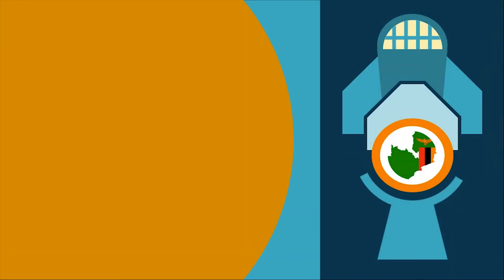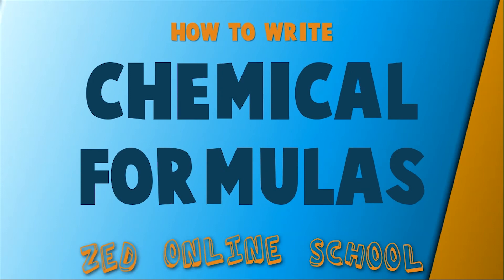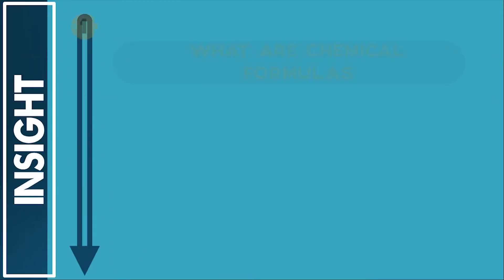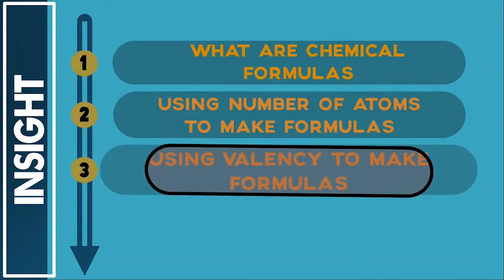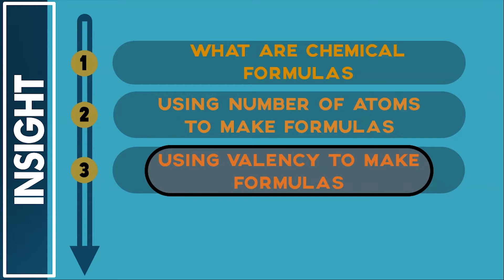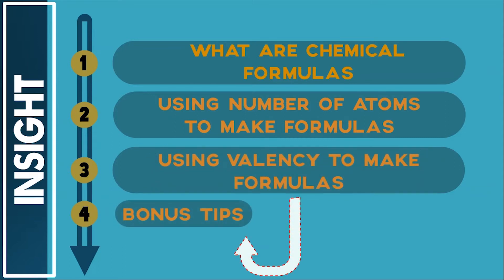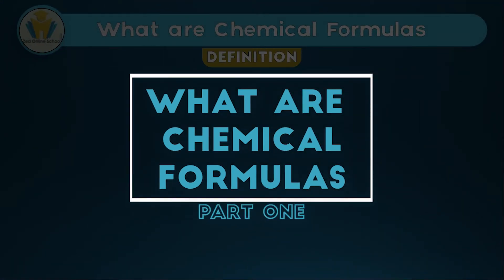Hi there, have you ever been bewildered by how some people write chemical formulas very easily? For example, someone might write calcium phosphate like this. This is Zed Online School, and in this video we'll be talking about how to write chemical formulas. By the end of this video you should be able to know what a chemical formula is, how to use atoms to make a chemical formula, how to use valences of elements in a compound to make a chemical formula, and we've got some bonus tips to help you rarely get questions on chemical formulas wrong.